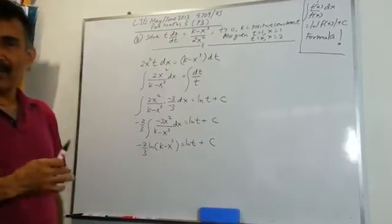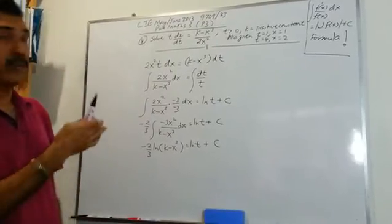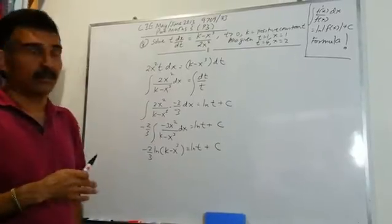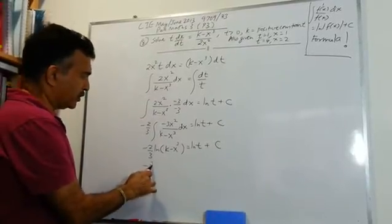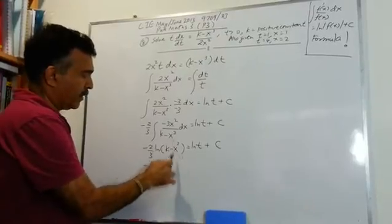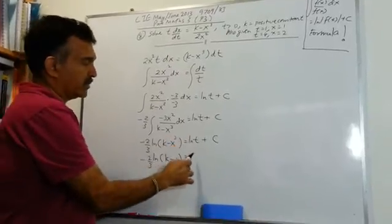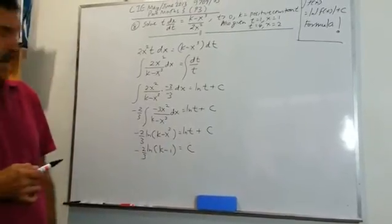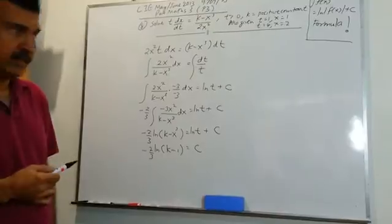Let's go ahead and get rid of c first. Let's use one of the initial conditions that were given to us: t = 1, x = 1. So let's plug it in. We get -2/3 · ln|k - 1| = ln(1) = 0, so I'm left with c = -2/3 · ln(k - 1).